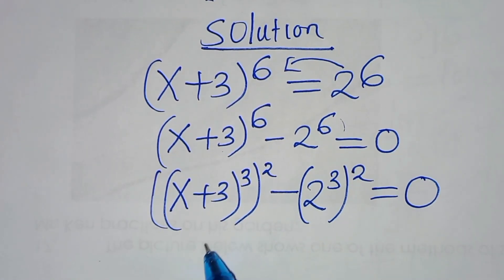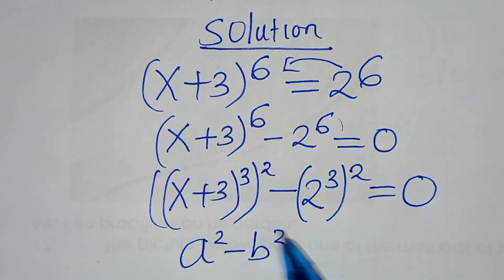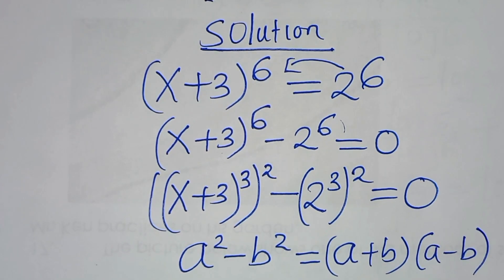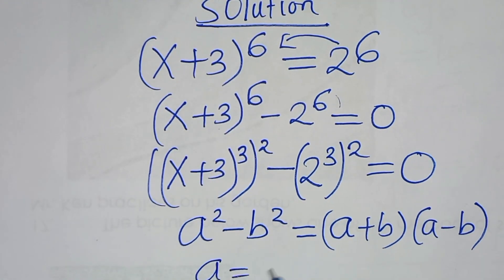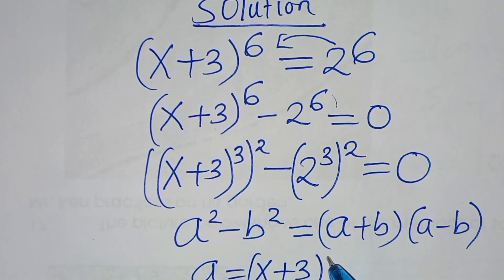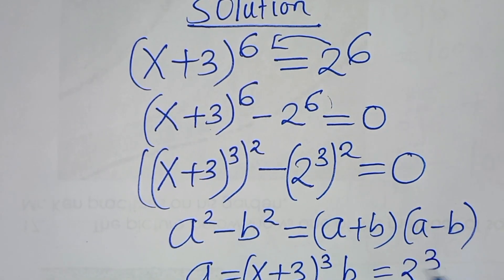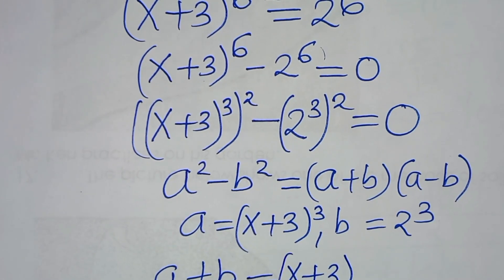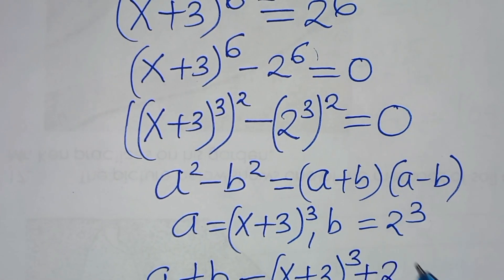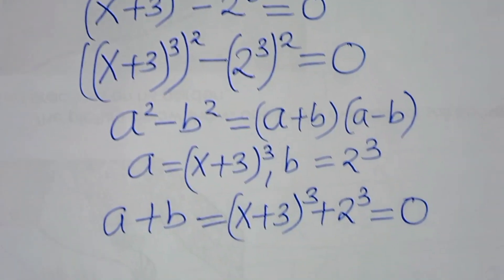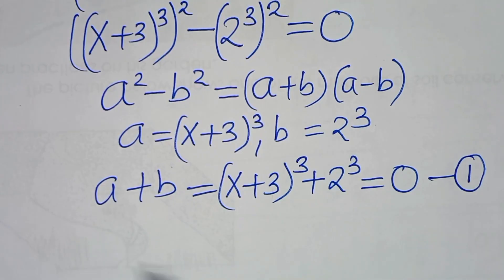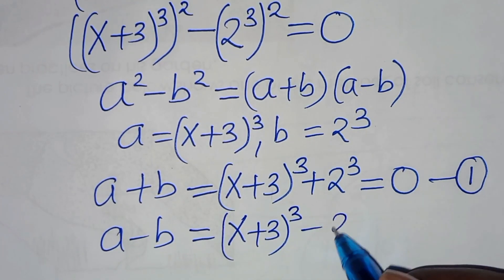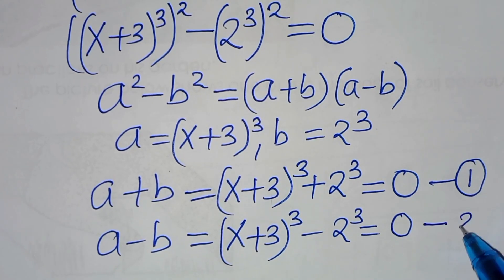This equation is in the form of a squared minus b squared, which is the difference of two perfect squares, which can be expressed as (a plus b)(a minus b). Here, a is equal to x plus 3 raised to the power 3, and b is equal to 2 to the power 3. So the first equation is x plus 3 raised to the power 3, plus 2 to the power 3, equals 0. And equation 2 is x plus 3 raised to the power 3, subtract 2 to the power 3, equals 0.